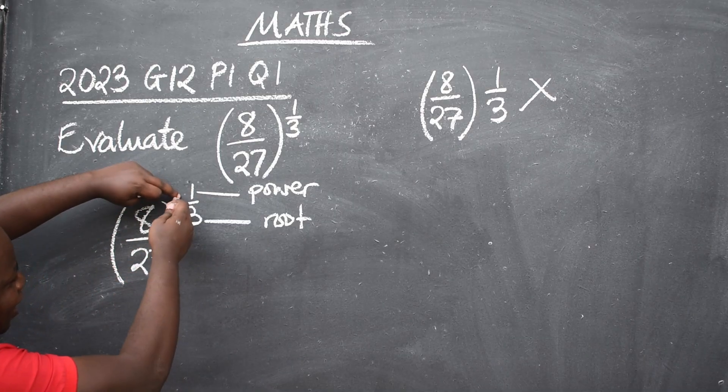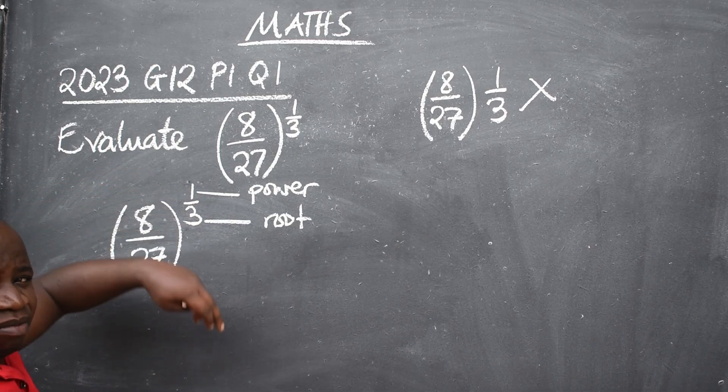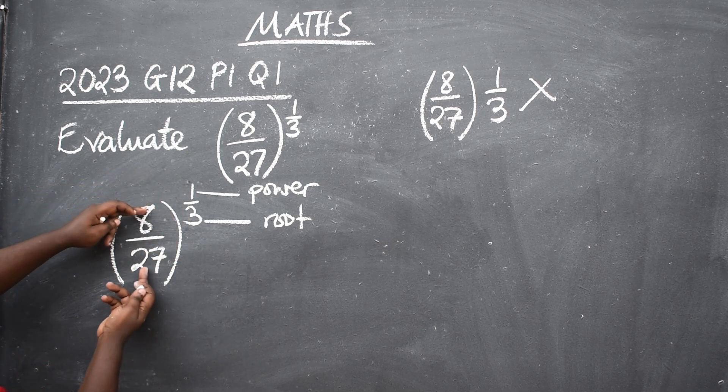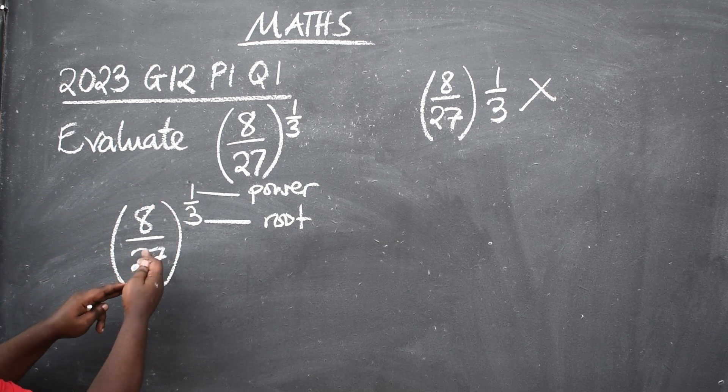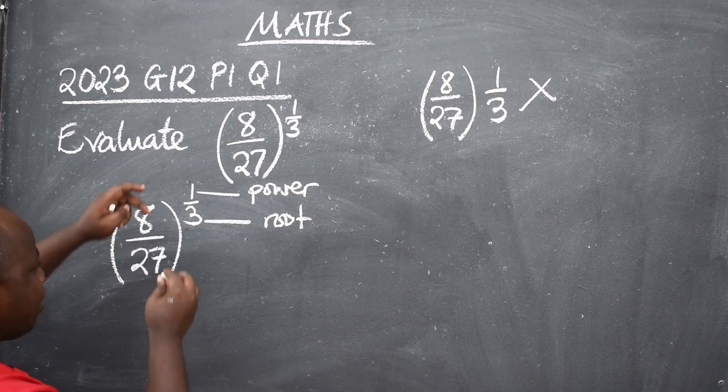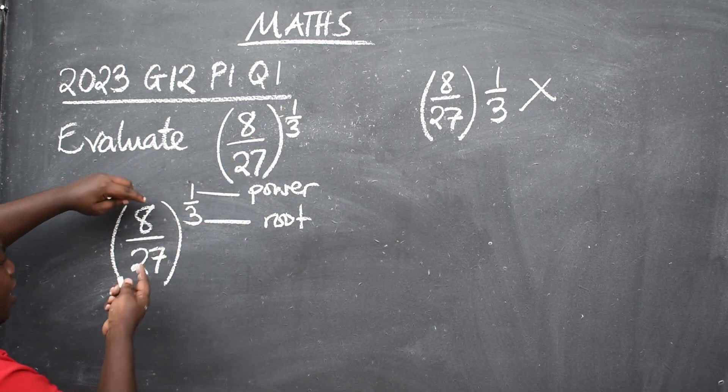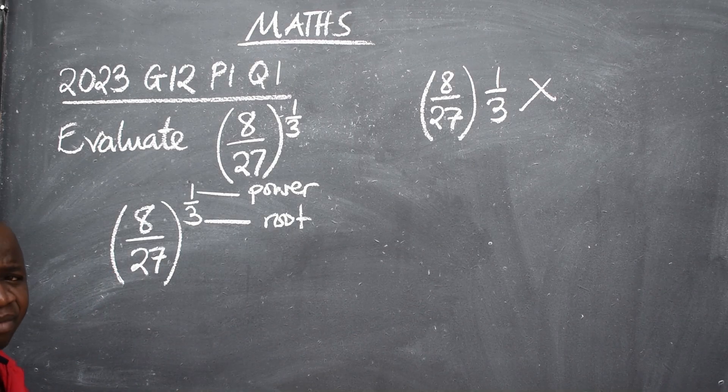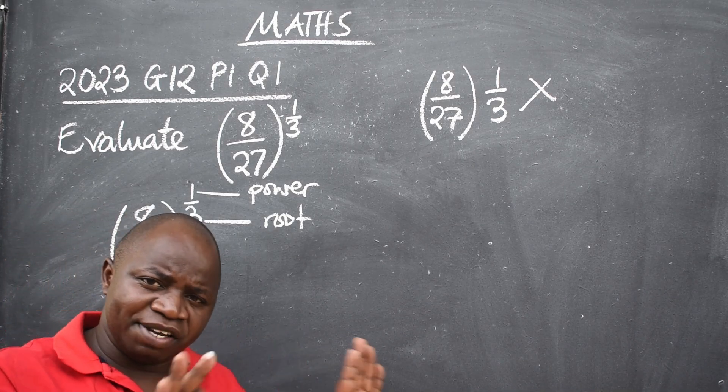If we had a negative here we could have flipped these two numbers. But since we don't have a negative they will remain the way they are. If we had a negative then 27 could have been on top, 8 down. But the way it is non-negative, leave them the way they are.